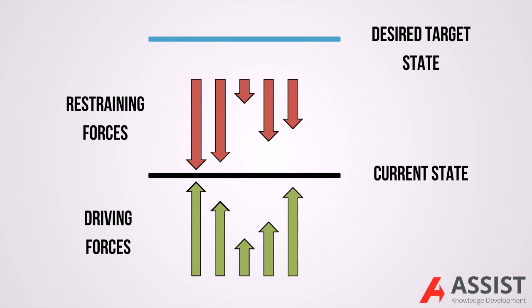The arrows pointing downwards signify the negative forces that are retaining the current state by resisting any progression towards the desired state.